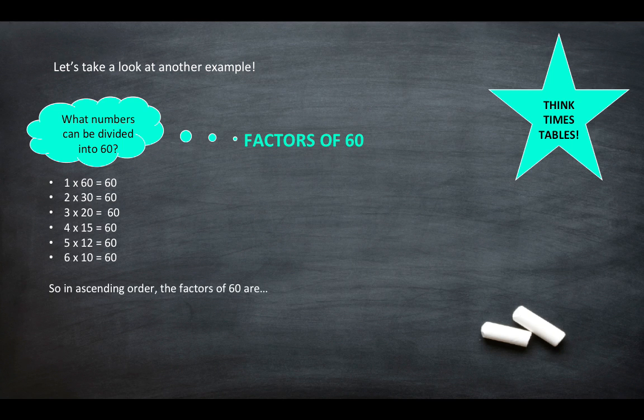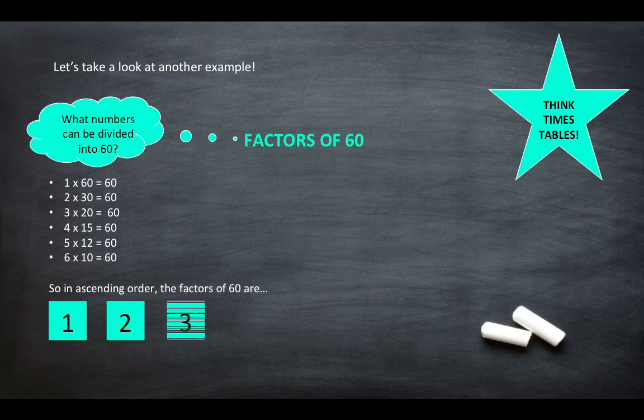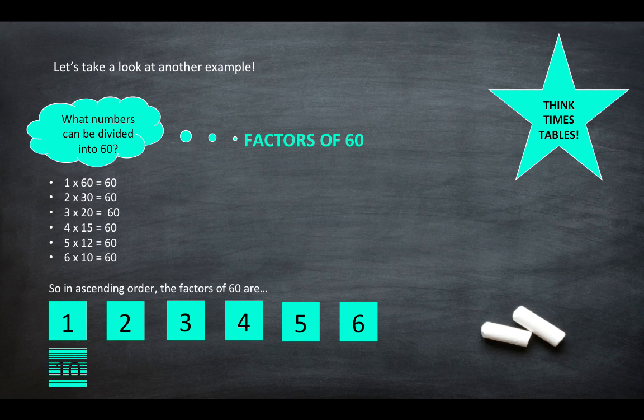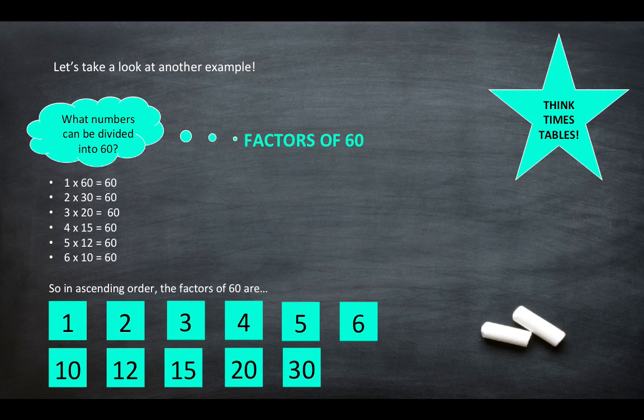So in ascending order. So in ascending order the factors of 60 are 1, 2, 3, 4, 5, 6, 10, 12, 15, 20, 30 and 60. Okay, because all of these numbers can be divided into 60.